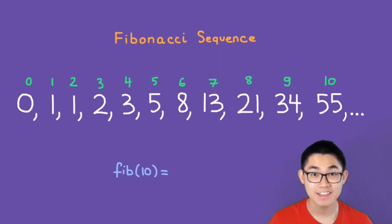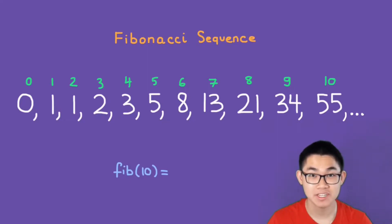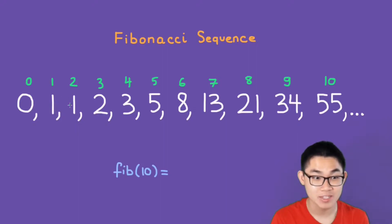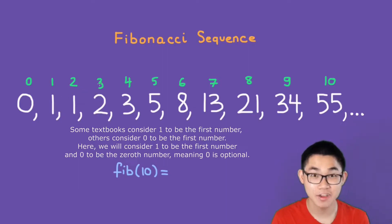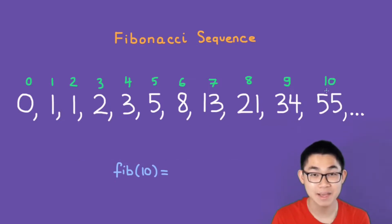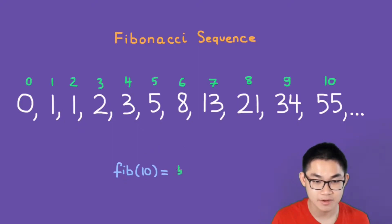Let's say your math teacher wants you to find the 10th number in the Fibonacci sequence. It's very easy. All we have to do is label these numbers first, starting at 0. We keep going until we get to number 10, and we see that the 10th number is actually 55. So the answer — the 10th number in the Fibonacci sequence — is 55.